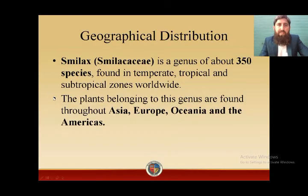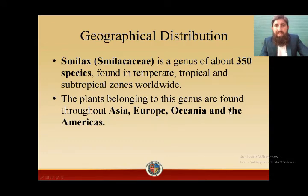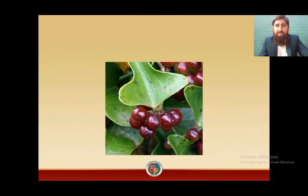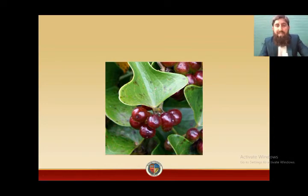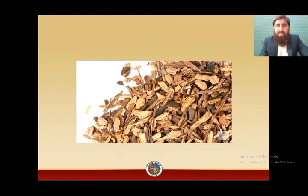Geographical distribution: Smilax is a genus of about 350 species found in temperate, tropical, and subtropical zones of the world. Plants belonging to this genus are found throughout Asia, Europe, Oceania, and the Americas, both North and South America. This is the picture of Smilax — look at the leaf structure and also the fruits, which look like berries. This is also the picture of the dried roots of Smilax cut into small pieces.